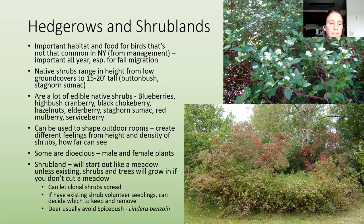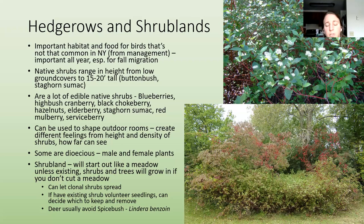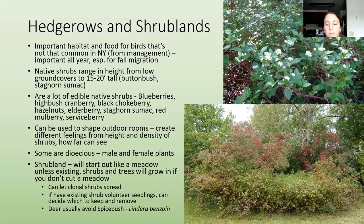Shrublands will start out like a meadow unless you have existing shrubs. Thinking about natural succession, shrubs and trees will grow into any meadow if you don't cut it. You can let things grow and then select desirable natives to keep and remove invasives. If you have clonal shrubs like red twig dogwood, you can let those spread where you'd like them and keep them in check by mowing around the edges. Spicebush is a good native shrub that deer don't usually eat much.